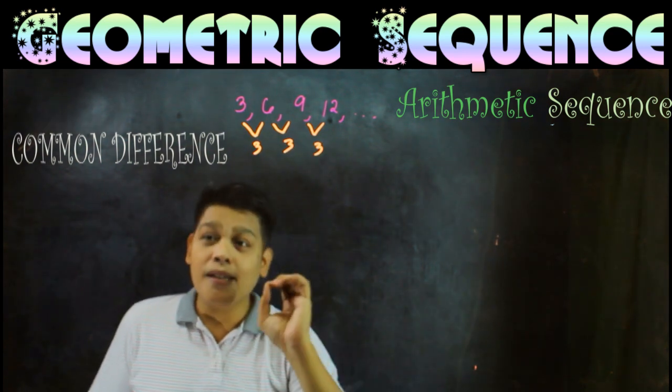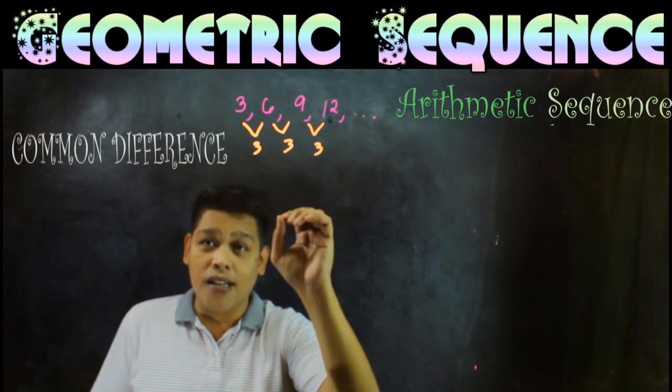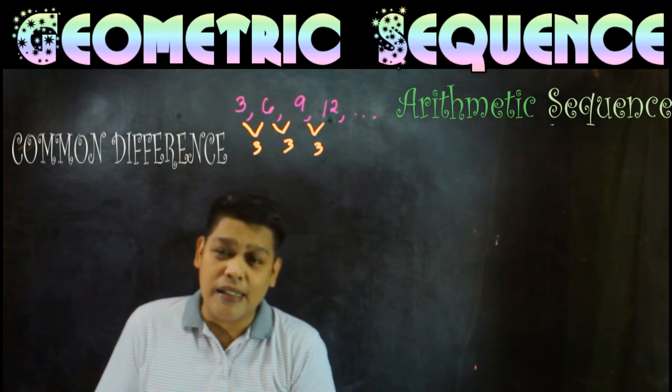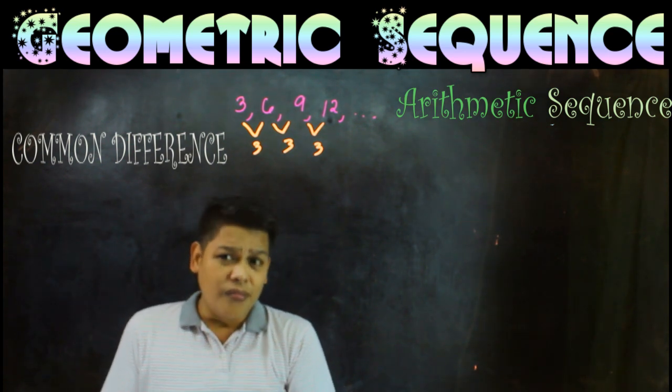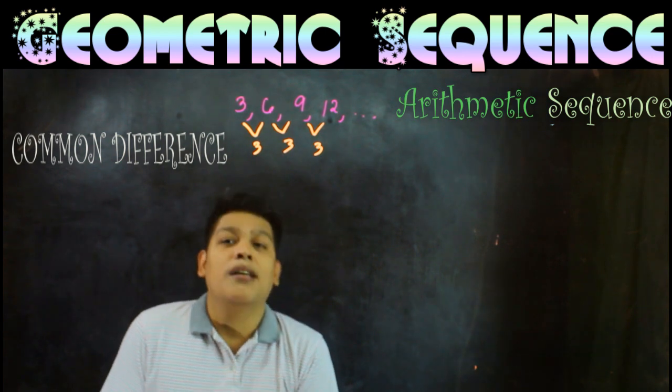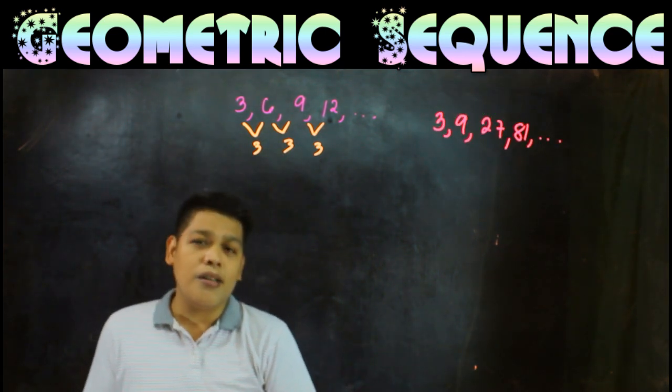You can see here, if we subtract 12 minus 9 is 3, 9 minus 6 is 3, 6 minus 3 is 3. So this is an example of arithmetic sequence. Now let's look at this sequence: 3, 9, 27, 81, and so on.